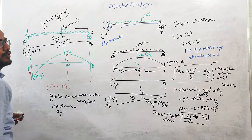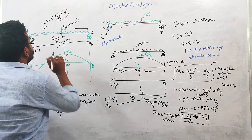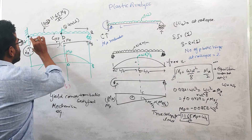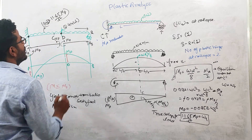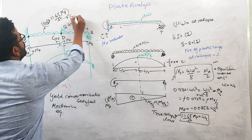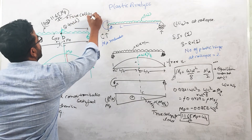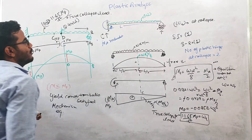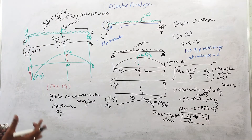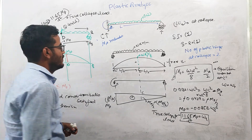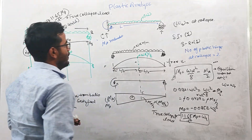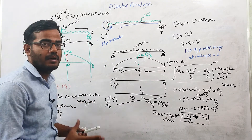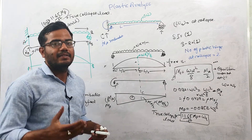The MP value will be given, and you need to calculate the collapse load for the prop cantilever. This is our true collapse load, solved using the equilibrium or static method. This is a very good problem on the equilibrium method. If you have any doubts, write in the comment section — we will meet in the next lecture.